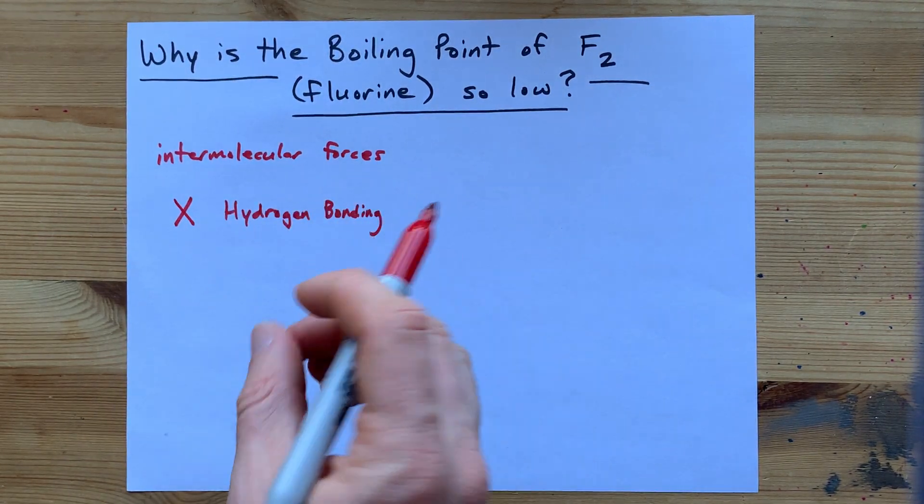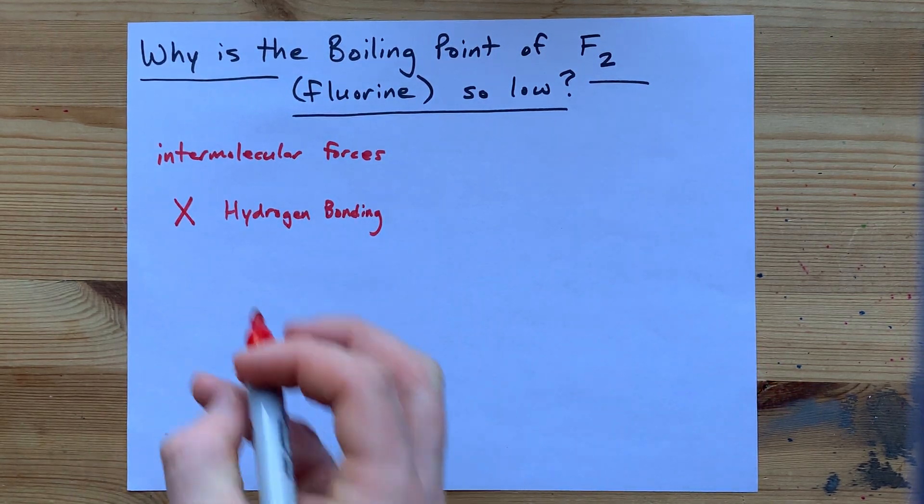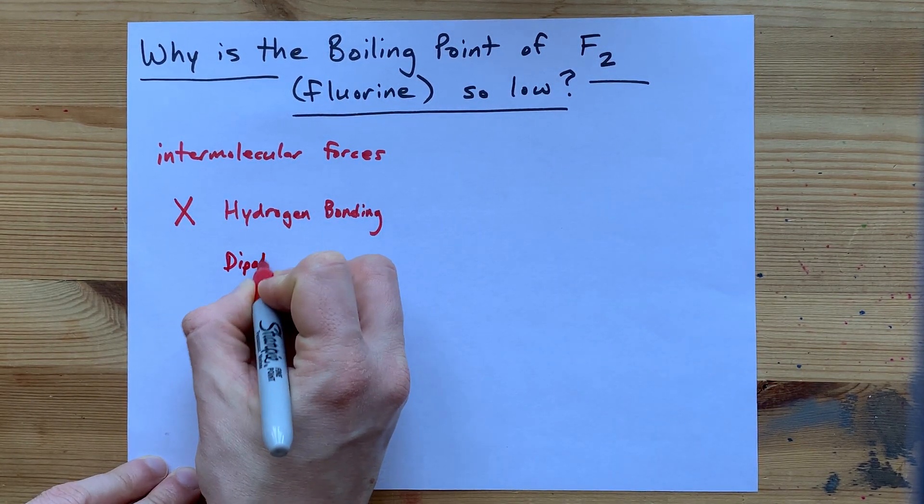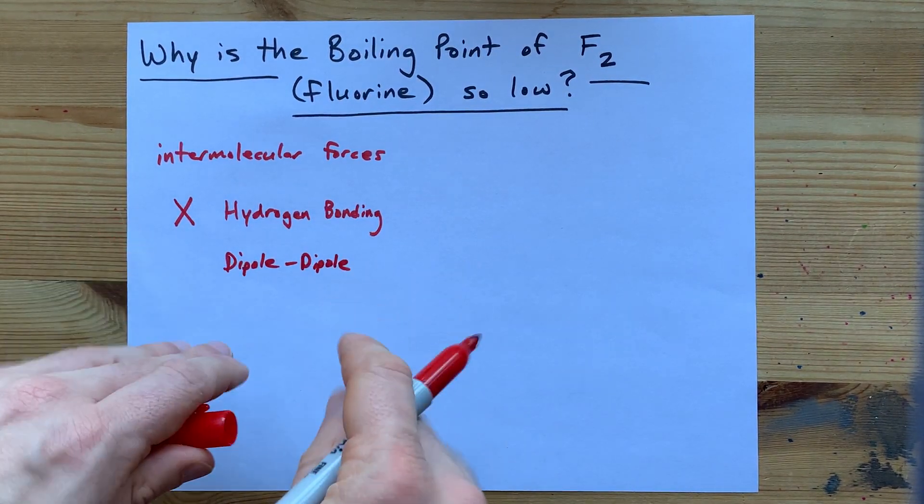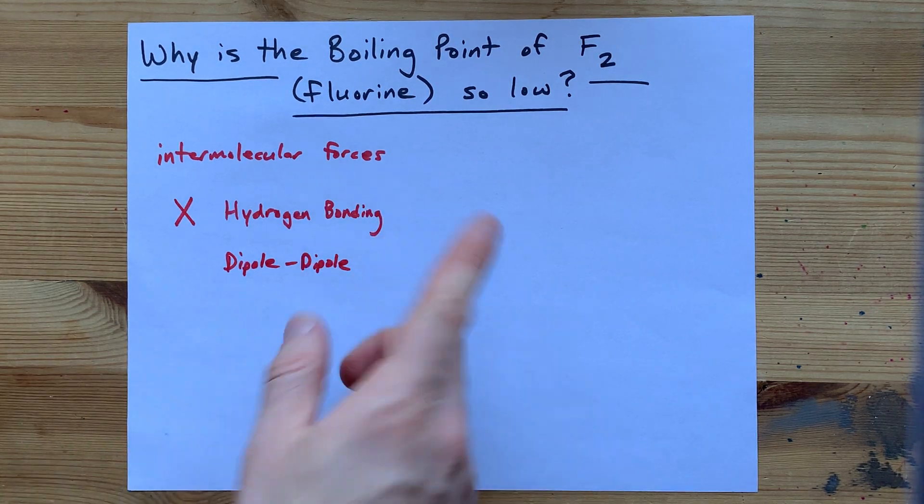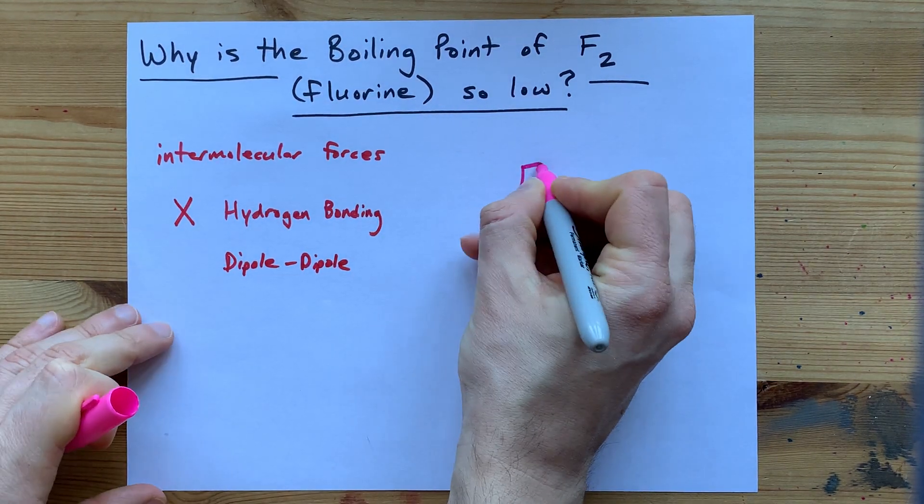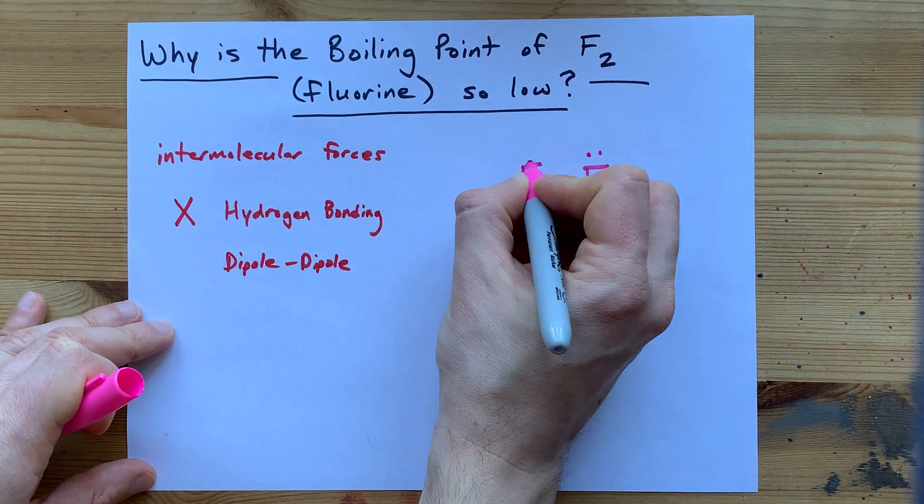The next strongest intermolecular force that could make these molecules stick together is called dipole-dipole forces. This force only occurs between polar molecules. Let me draw you the Lewis structure for fluorine, F with a single bond to another F, and three lone pairs around each one.